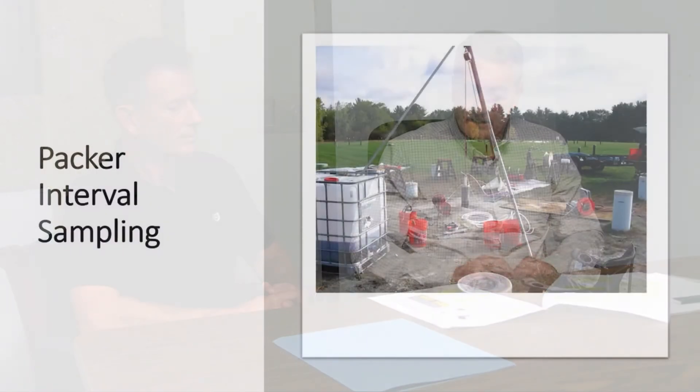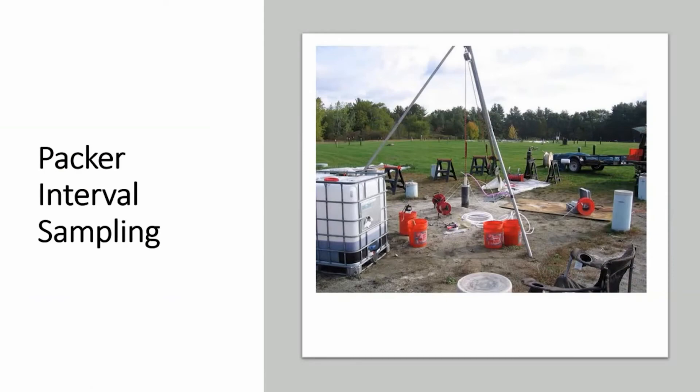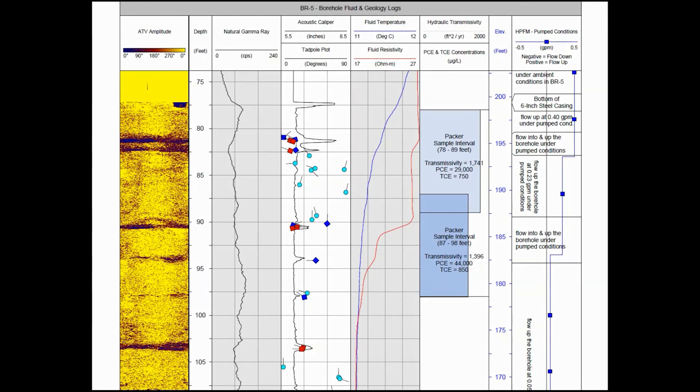The next step was conducting packer tests, where a section of the borehole is sealed off and a discrete sample is collected from that interval. At a couple of locations at this site, they identified very high concentrations of contaminants that would almost suggest the presence of DNAPL that may have migrated into the bedrock system.